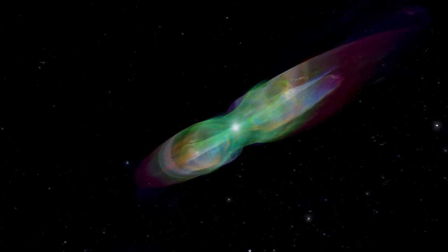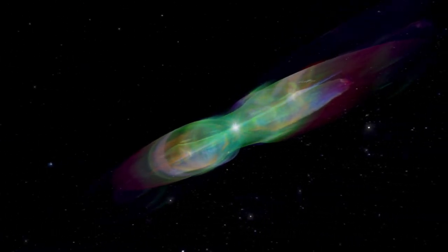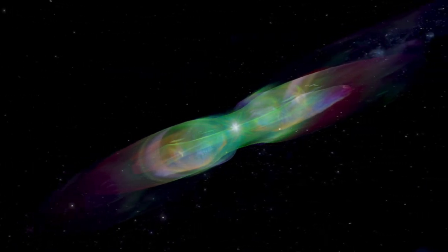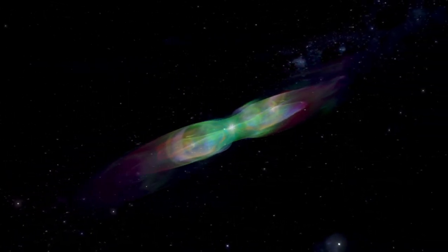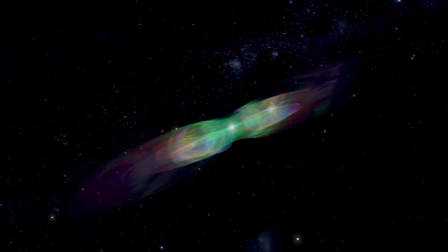The ultraviolet radiation from the star energizes the ejected material, causing it to appear as a brightly colored planetary nebula.